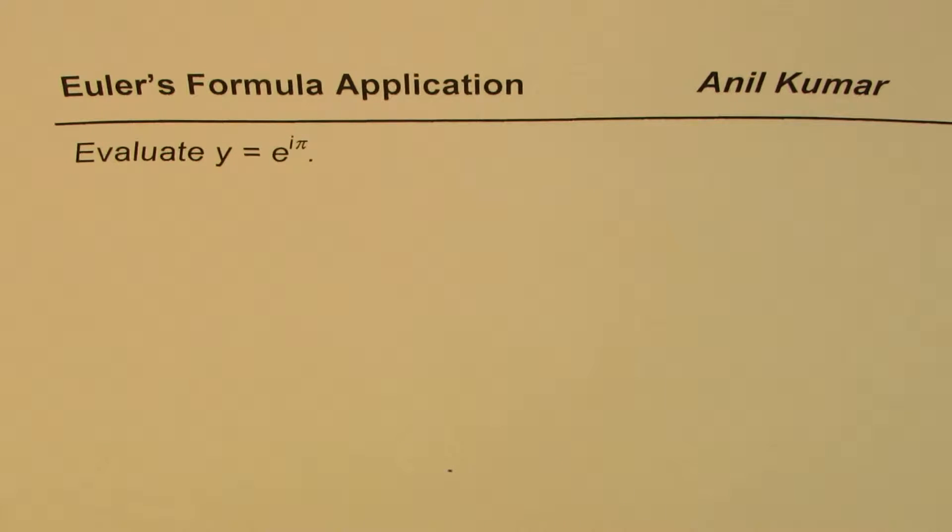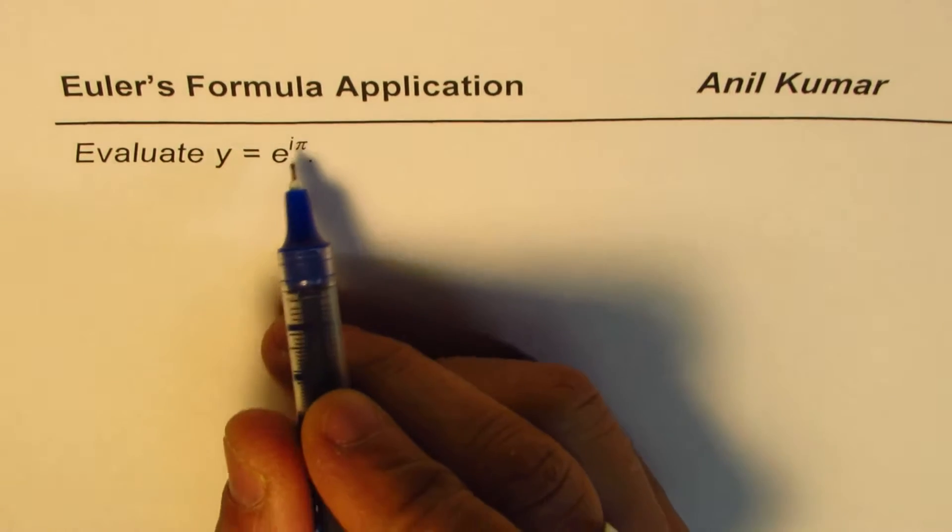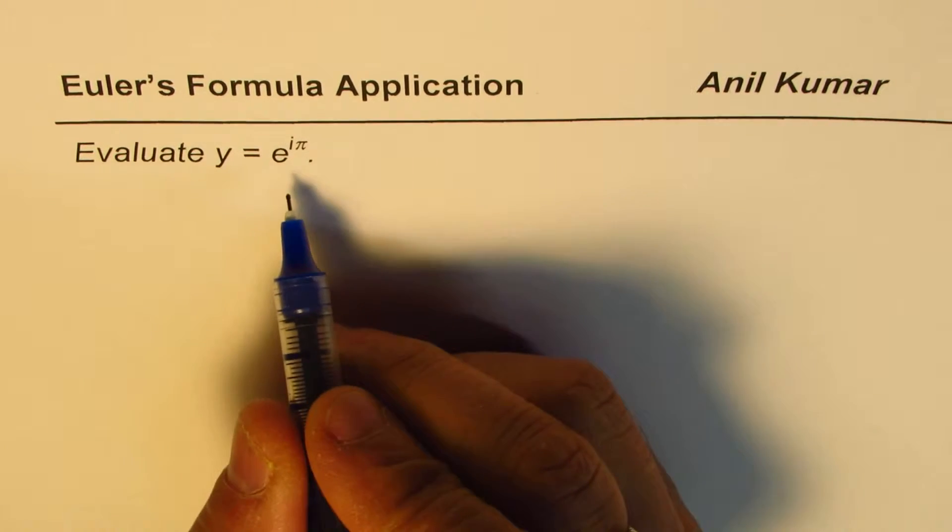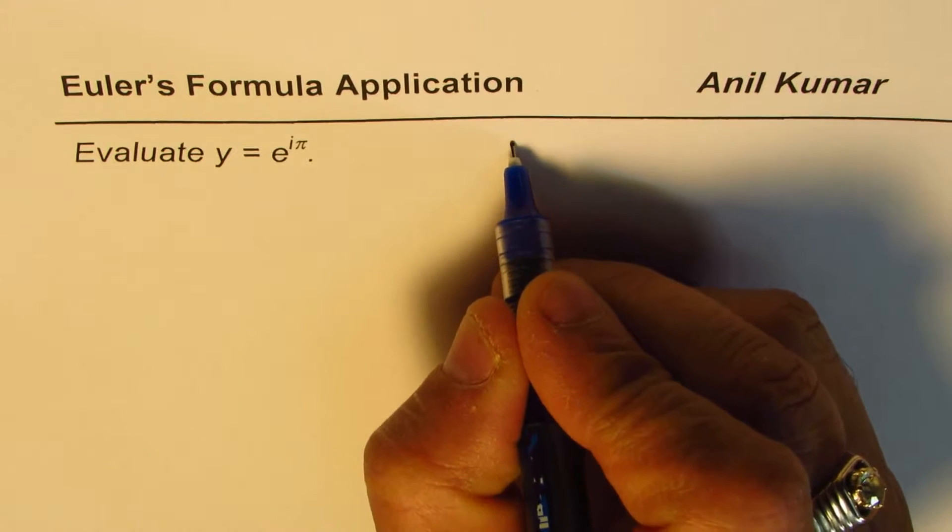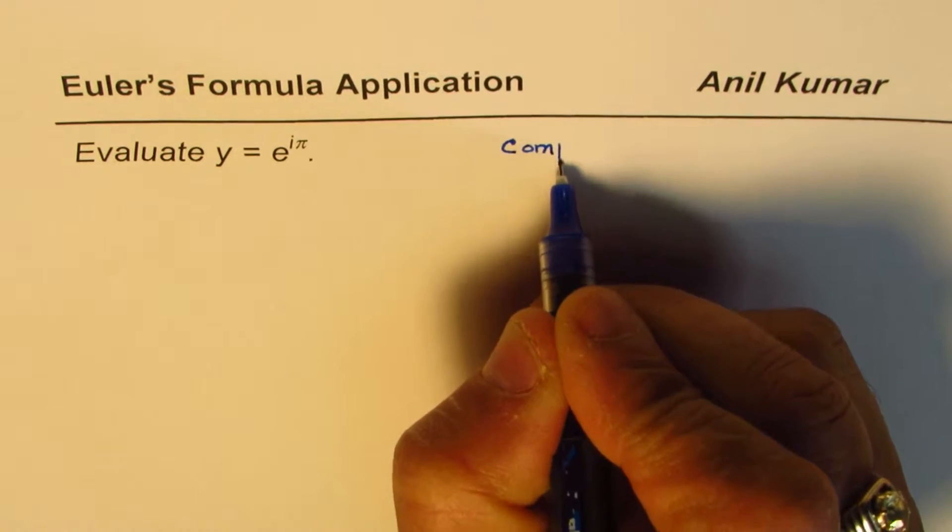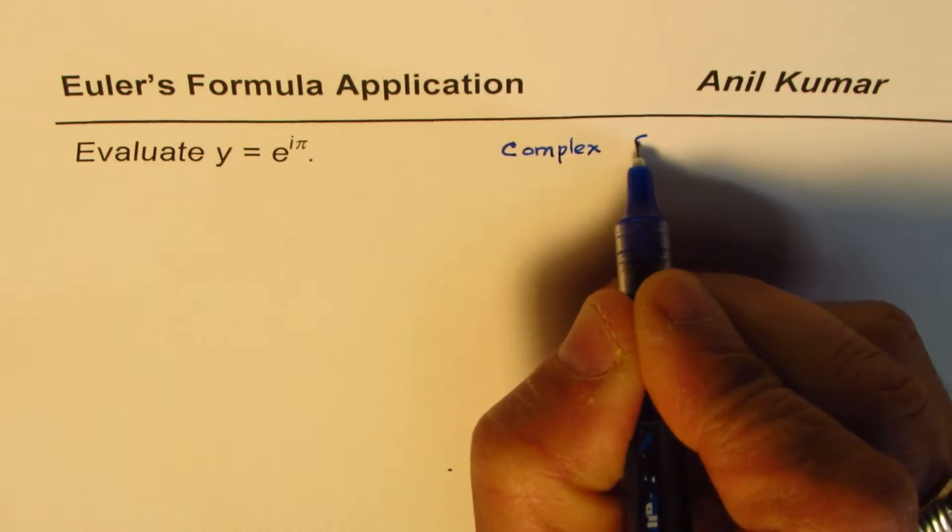The question here is, evaluate y equals to e to the power of i pi. Now here the exponents which we have are in the domain of complex numbers. So we are talking about complex exponents.